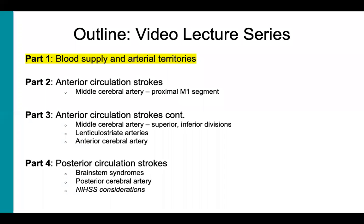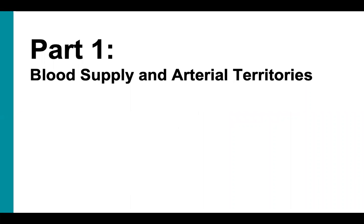This is going to be a four-part video lecture series. The first lecture will be an anatomical review of the brain's blood supply and the territories that each artery covers. Then, anterior circulation strokes will be split between lectures two and three. Lastly, in the fourth video, we will cover posterior circulation strokes. So let's get started.